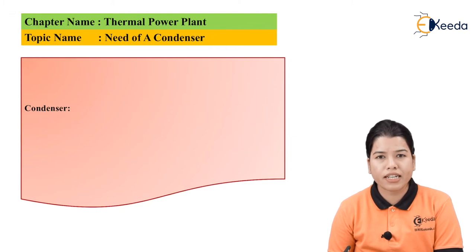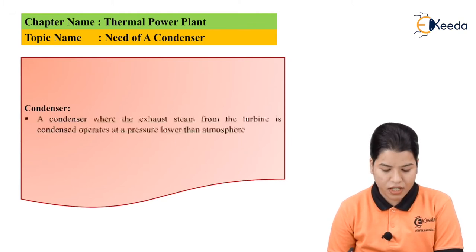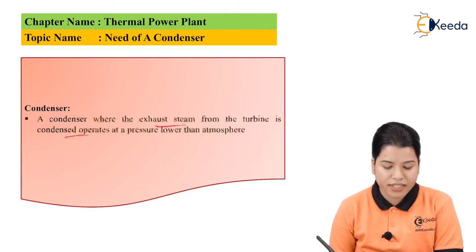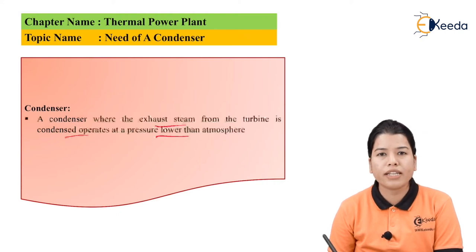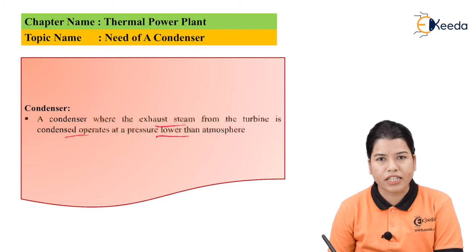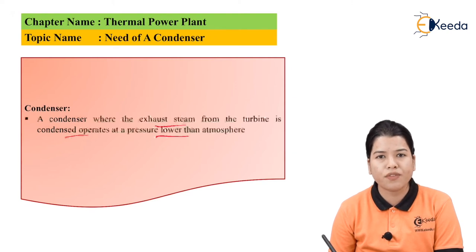The condenser is where the exhaust steam from the turbine is condensed, and it operates at a pressure which is lower than the atmospheric pressure. The output of the steam turbine is coupled with the generator, so the mechanical energy gets converted into electrical energy. Whatever steam is let out from the turbine has to get condensed, so the condenser is used for the condensation of steam at a pressure lower than atmospheric.